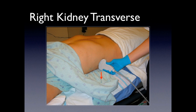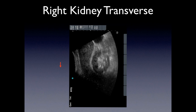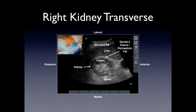For the transverse view, you're going to rotate your probe counter-clockwise about 90 degrees, with the indicator towards the bed. You're going to be seeing an image with your probe on the lateral side, the medial side, the anterior and the posterior, and your indicator pointing down. You have some skin and subcutaneous tissue, the liver, Gerota's fascia with perinephric fat, and the kidney.